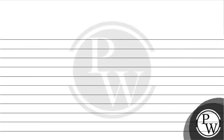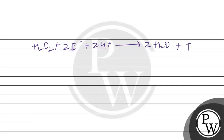I will now explain the answer. First, we will look at the reaction of hydrogen peroxide with potassium iodide solution. Here, H₂O₂ reacts with two iodide ions and two hydrogen ions to give two moles of water and one mole of iodine. So, hydrogen peroxide is oxidizing the iodide ions to iodine.